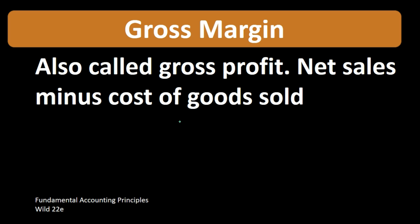That cost of sales is the most important expense — usually the largest expense. Therefore, we have this section on the income statement. Generally, if we have a multi-step income statement, we use it to calculate the gross margin, also called gross profit.